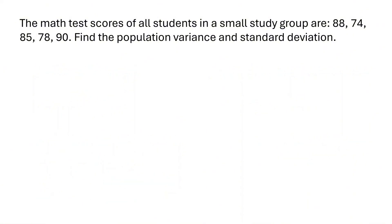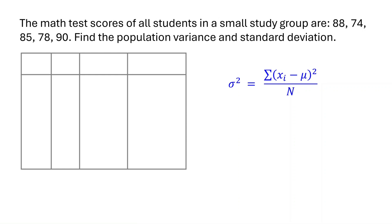Here are the math test scores of all students in a small study group. We will calculate the population variance and standard deviation for this dataset. Let's start with the variance. To keep things clear, we will organize our work in a table. In the first column, list all the data points in the population. We have 88, 74, 85, 78, and 90.